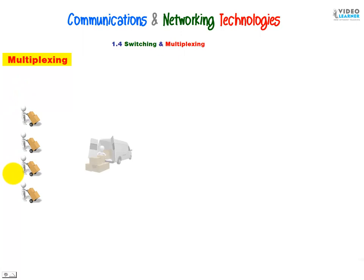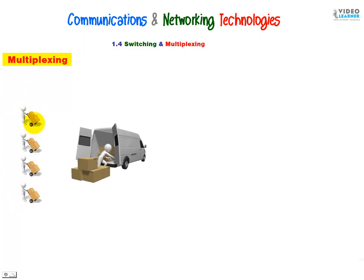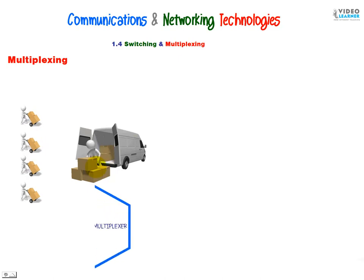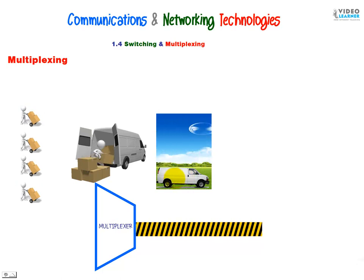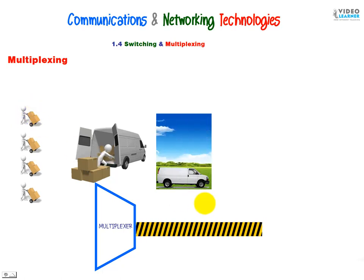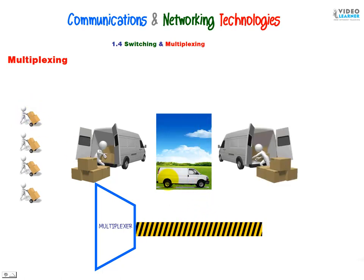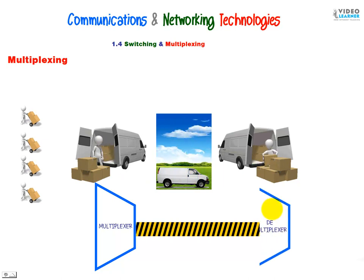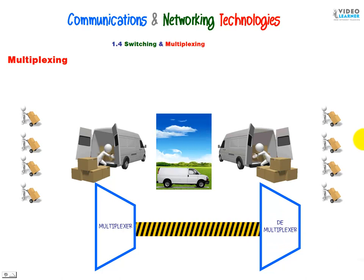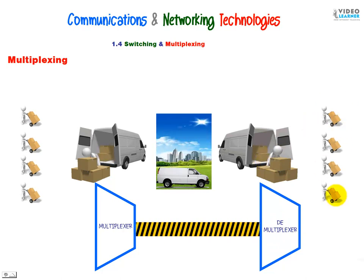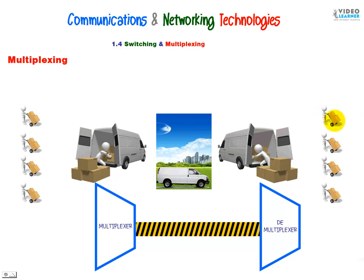Multiplexing. Here there are many persons with a trolley moving their packages into a van. They are multiplexing these packages, and then the van has high capacity, much more than a trolley. So we transfer our packages and after that we're going to do demultiplexing with a demultiplexer, and each trolley is going to get data to its destination.